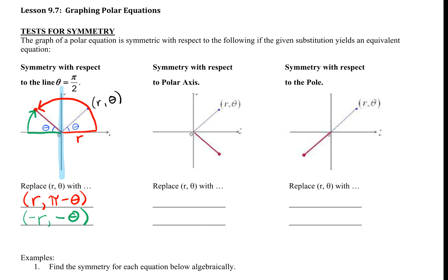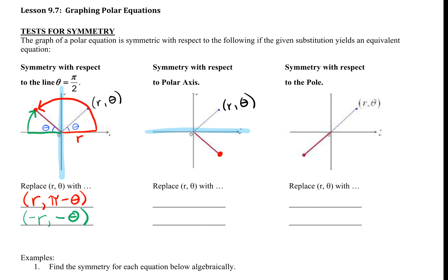Now symmetry with respect to the polar axis. Our polar axis is like our old x-axis. Again, we start with our generic point r comma theta. We want to get to the reflected point below. Starting with positive r: I move out r, then rotate downward. This angle is congruent to theta, so going in the negative direction gives r comma negative theta.